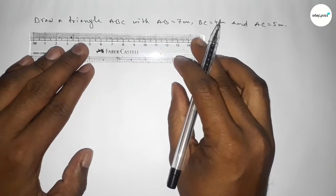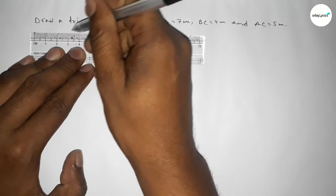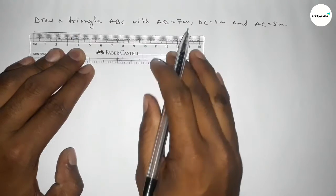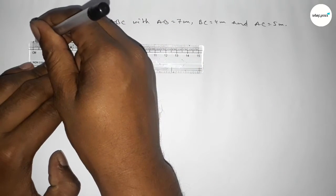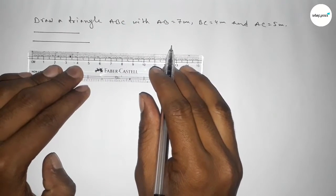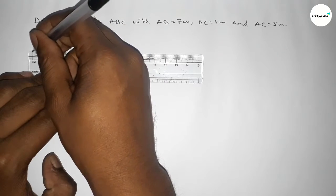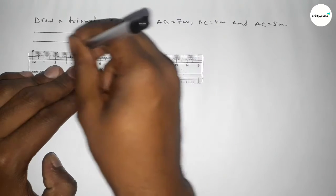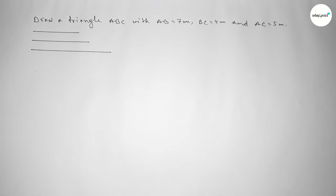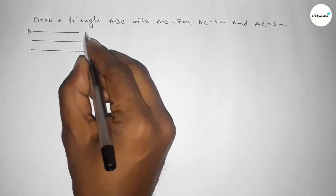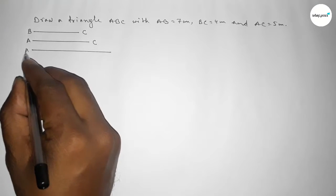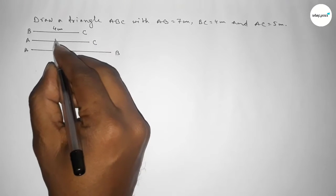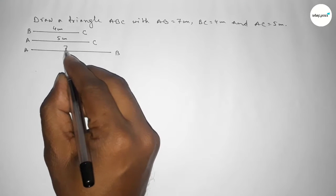First of all, we draw a line of length 4 centimeters, then another line of length 5 centimeters, and another line of length 7 centimeters. This first line is BC equal to 4 centimeters, the second is AC equal to 5 centimeters, and the last is AB equal to 7 centimeters.